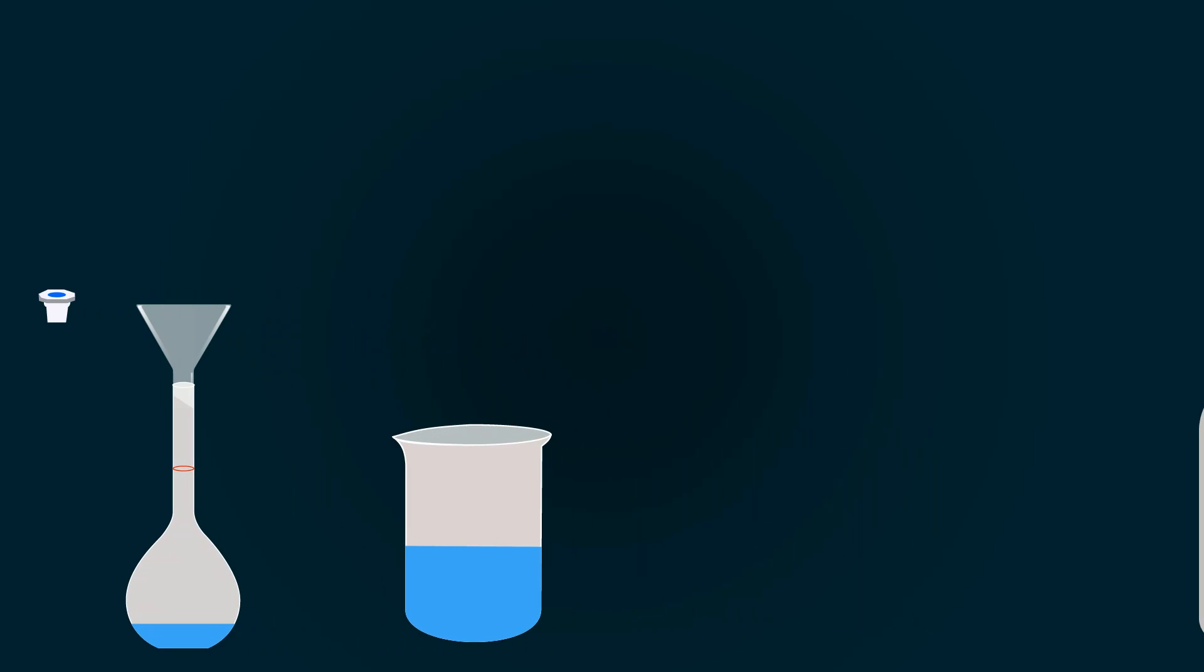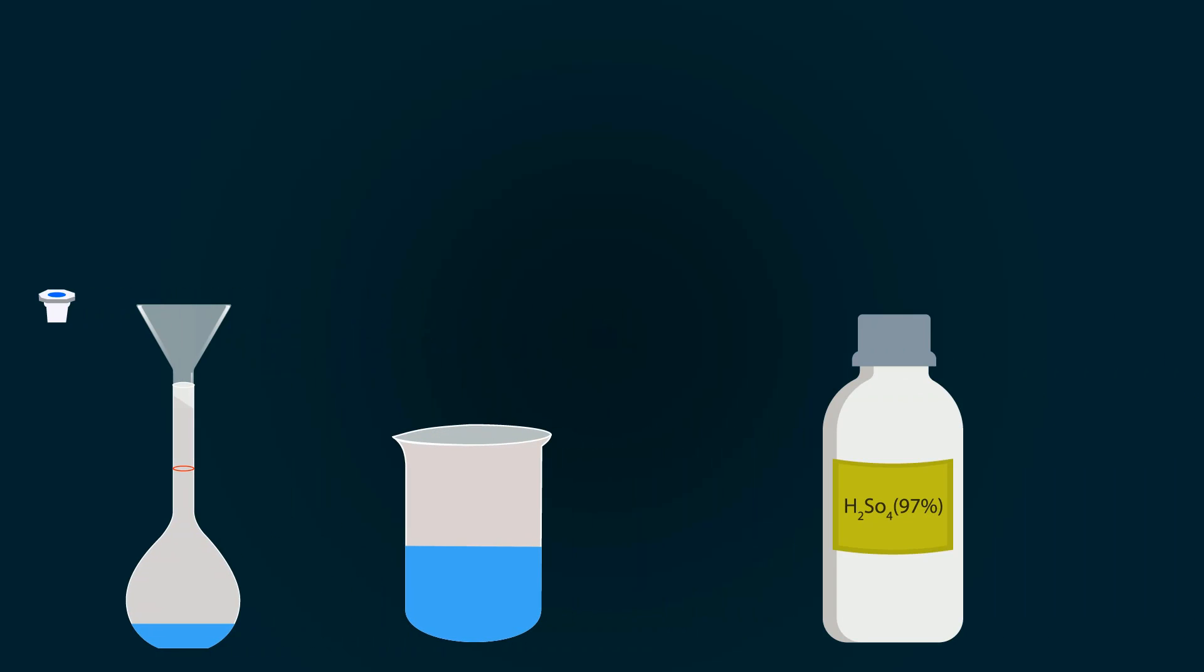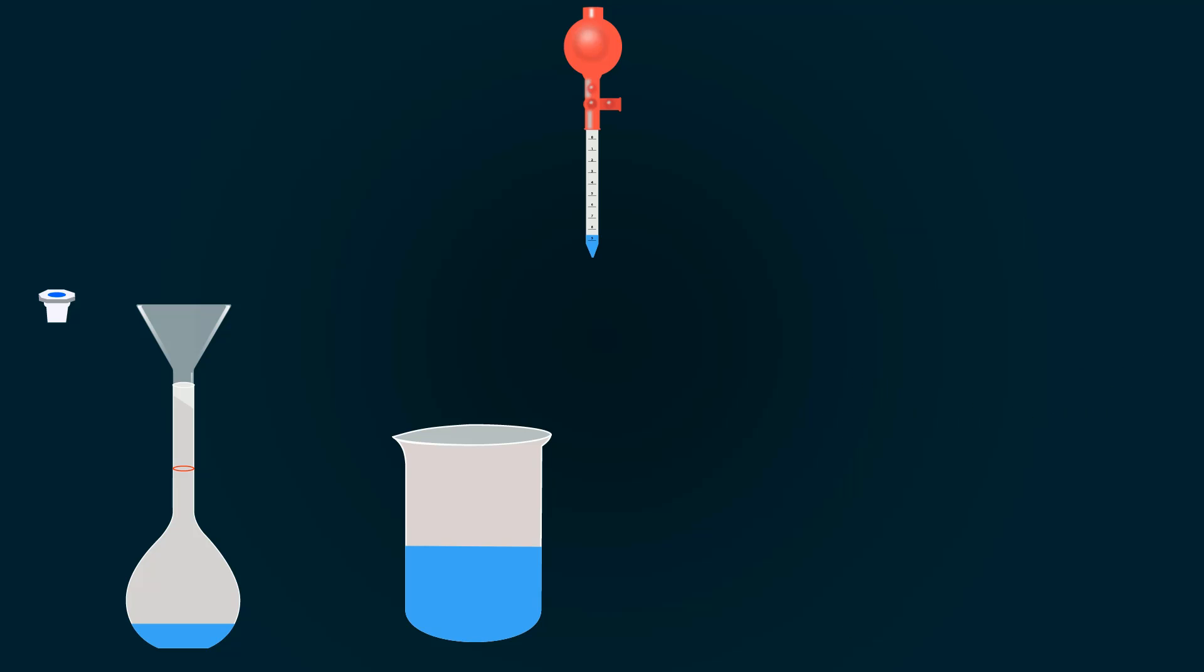Now take sulfuric acid and pipette out the required volume of 1.4 milliliter. Put this 1.4ml into the measuring flask.